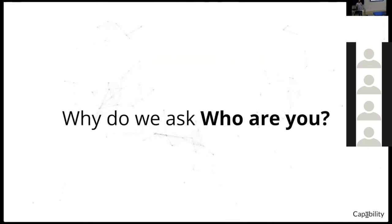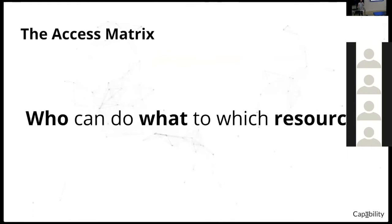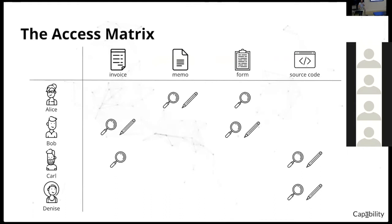The access matrix defines who can do what to which resource. There are three things in play: who, what can be done, and resources. Here's an example access matrix: on the left side column we have Alice, Bob, Carl, and Denise — those are our principals. Across the top row we have invoice, memo, form, and source code as resources. The reading glass and pencil are read and write permissions. For example, Alice can read and write the memo, Denise can read and write source code.